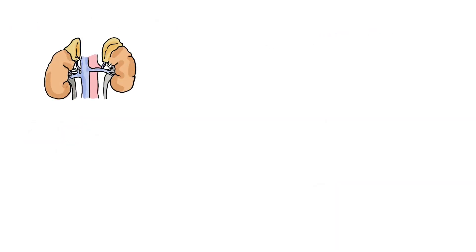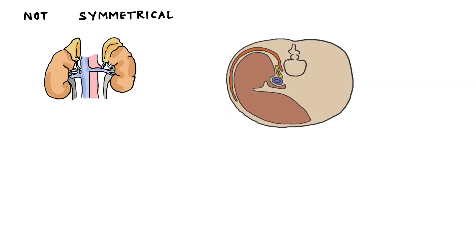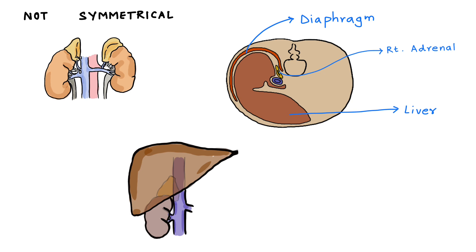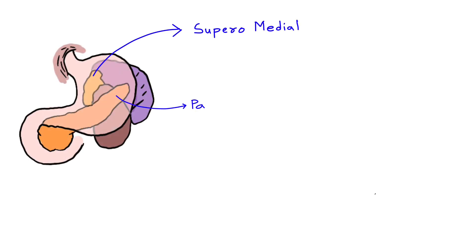If we look at the diagram of bilateral adrenal glands, we can see that they are not symmetrical. The right adrenal gland lies between the diaphragm and right lobe of liver. A part of the right adrenal gland also lies posterior to the inferior vena cava. The left adrenal gland lies on the supramedial aspect of the left kidney, and is covered by the tail of pancreas and spleen.